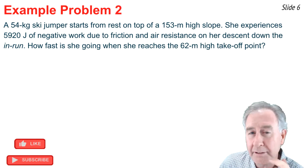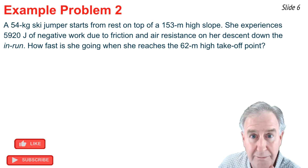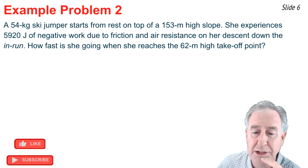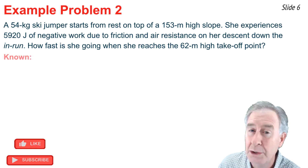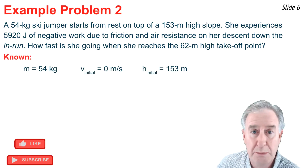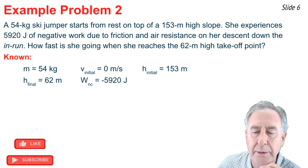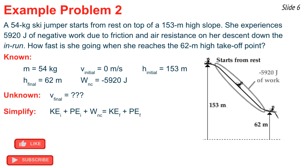Example 2: a 54 kg ski jumper starts from rest at a height of 153 m and reaches a takeoff point at 62 m. Work done by friction and air resistance is −5920 J. How fast is the skier going at takeoff? Known values: m = 54 kg, V_i = 0, H_i = 153 m, H_f = 62 m, W_nc = −5920 J. The unknown is V_f at the takeoff point.